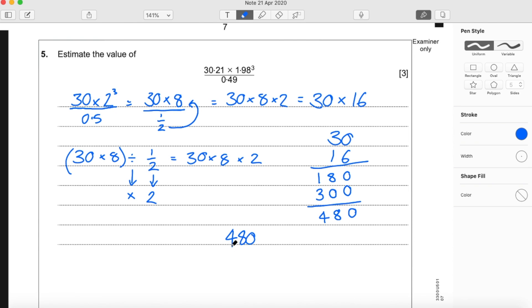480. That's an estimate of 30.21 times 1.98 cubed, all divided by 0.49.